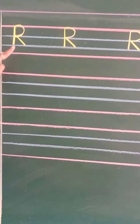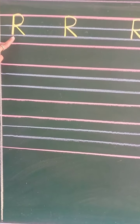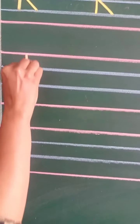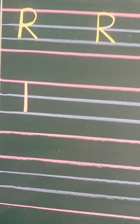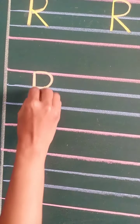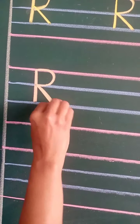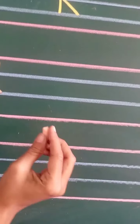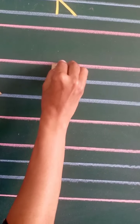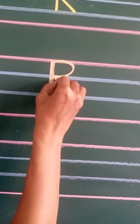Now let us do the formation of letter R. This is R. From the red line, draw a straight standing line like this. Now make a curve from the red line to the first blue line, and now make a slanting line and touch the second blue line. This is letter R. Look here once again. Draw a straight standing line, draw a curve, and now draw a slanting line. This is R.